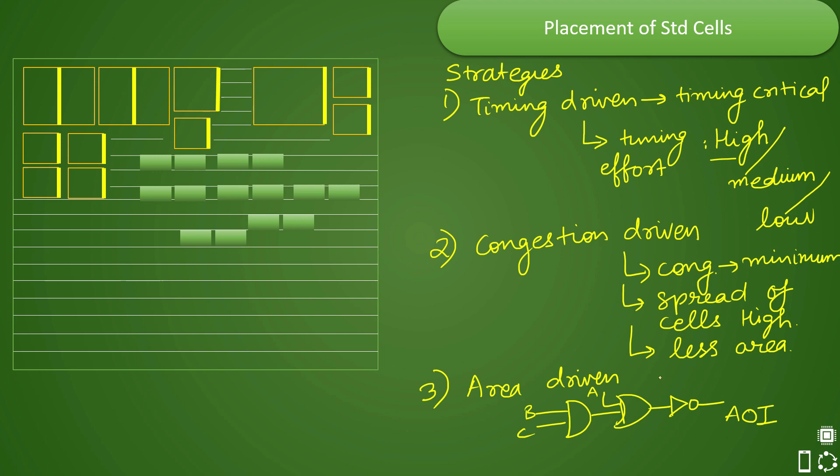So you are replacing three cells with one cell here. That way you are actually recovering the area by doing logical restructuring. The terminology, typical terminology that is available for this is logical restructuring such that your area is recovered.